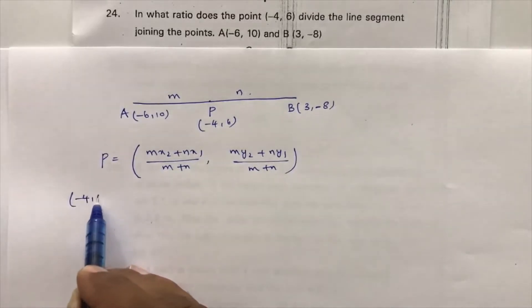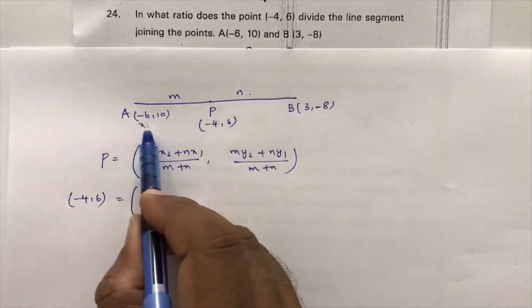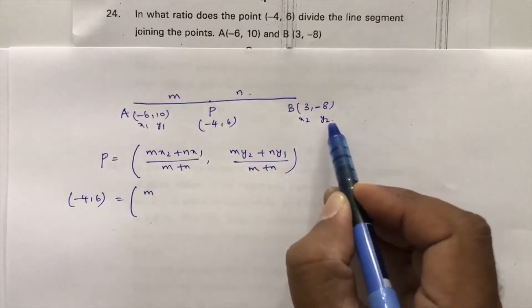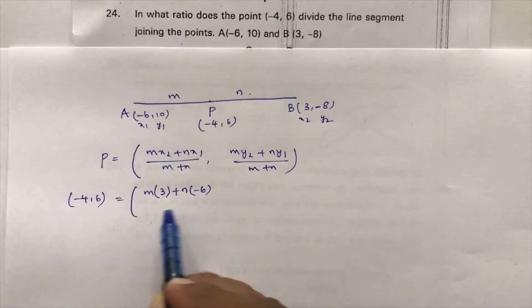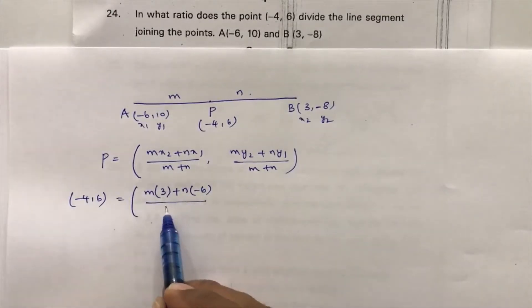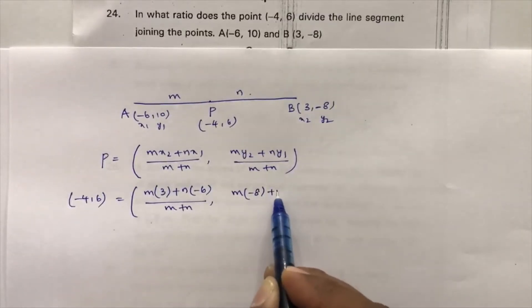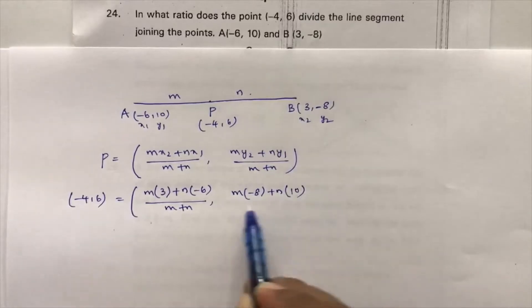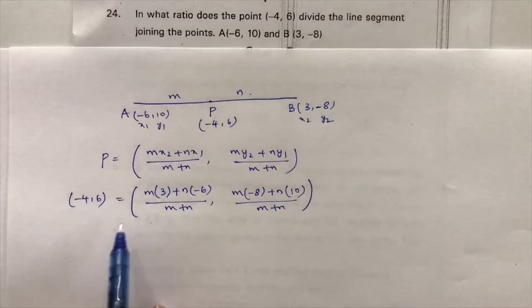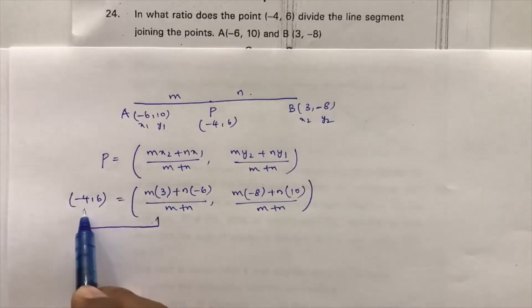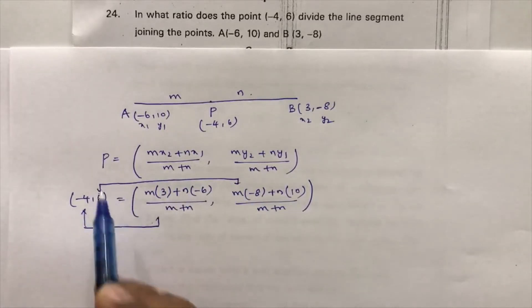The point P is (-4, 6). Here, A(-6, 10) is (x1, y1) and B(3, -8) is (x2, y2). So applying the section formula: x = (m·x2 + n·x1) / (m + n) = (3m + n·(-6)) / (m + n), and y = (m·(-8) + n·10) / (m + n). You can equate abscissa with abscissa or ordinate with ordinate — your choice. Either one will give you the ratio.